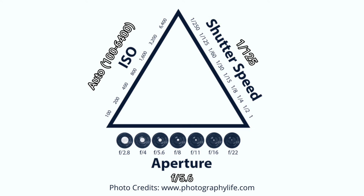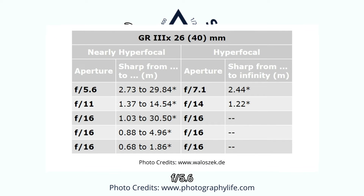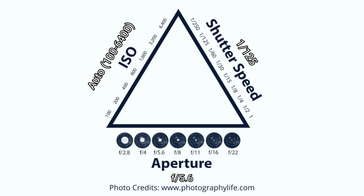For aperture, I usually start with f/5.6 for daytime shooting. This value gives me a balance between subject separation and enough depth of field to capture most of my scene. Most street photographers don't like to blow the foreground or background into bokeh oblivion because they want contextual information in the photograph — a creative decision that suits my style. f/5.6 also gives me enough depth of field to comfortably use the snap focus function on my GR. There's a great article about aperture and snap focus depth of field linked in the description.